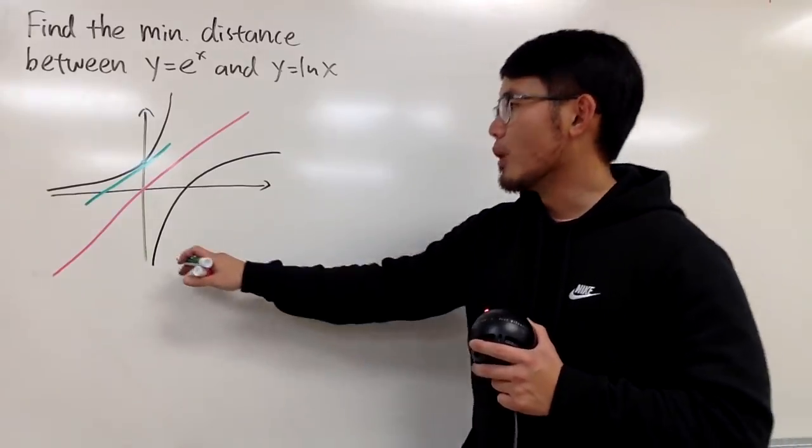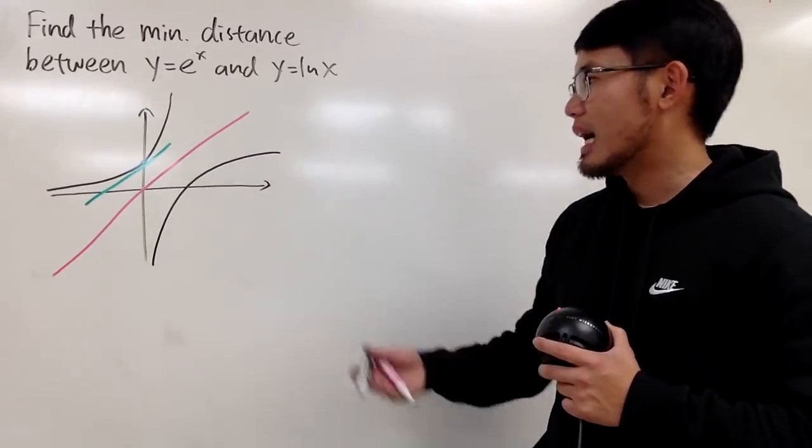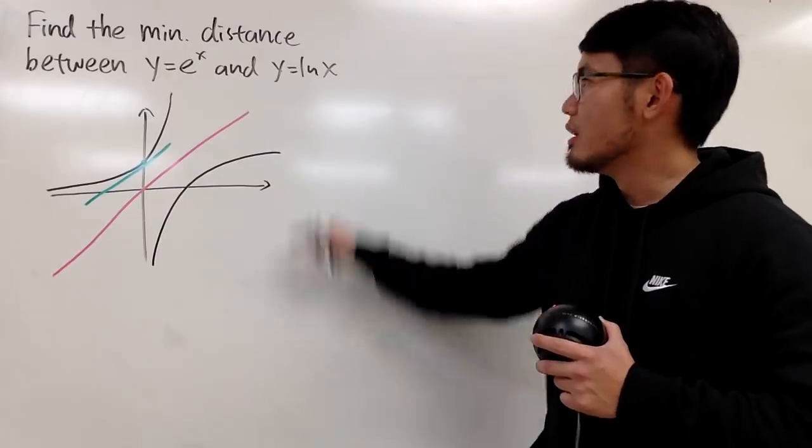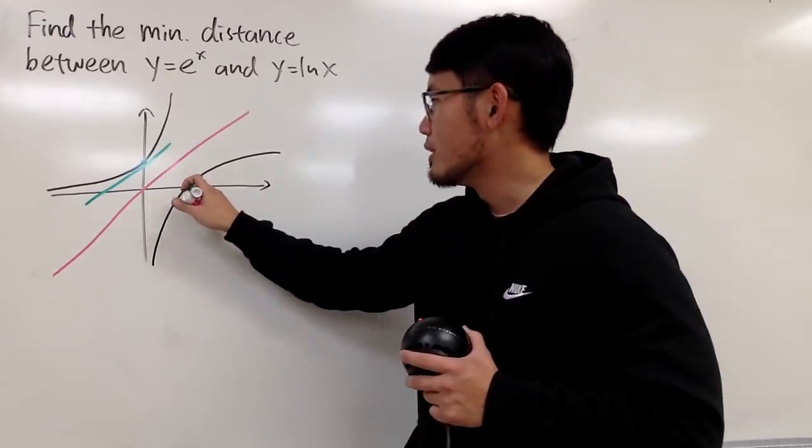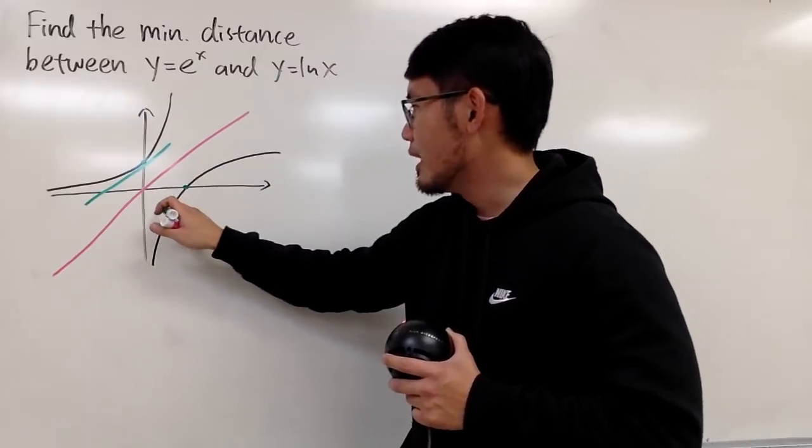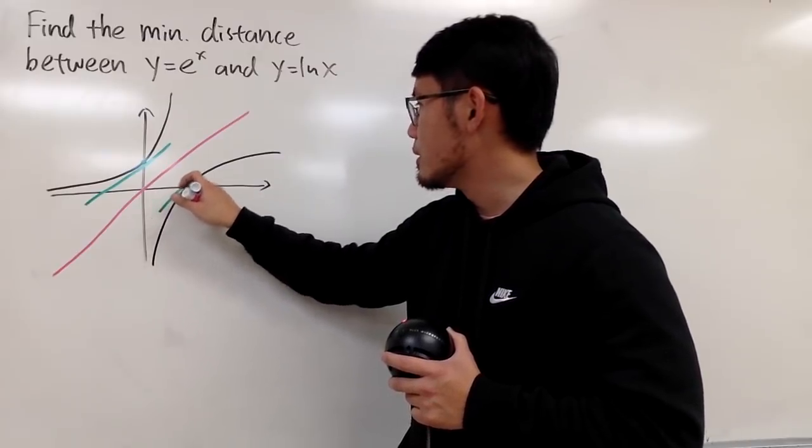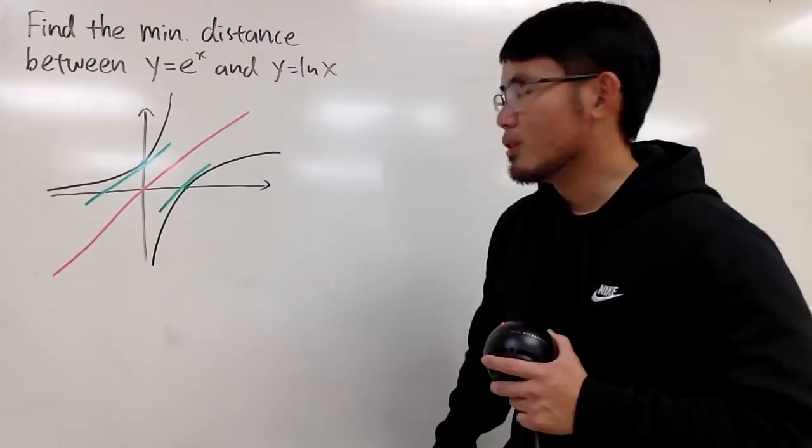Similarly, where does ln(x) have slope 1? The derivative is 1/x, and when you plug in 1, you get 1. So the point is (1,0), and if you draw the tangent line, you have that.